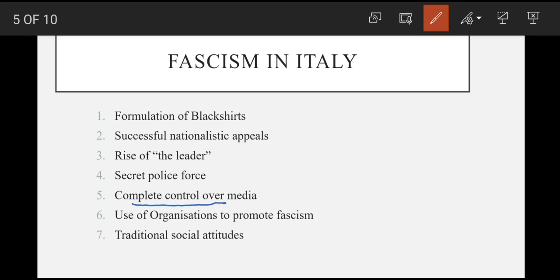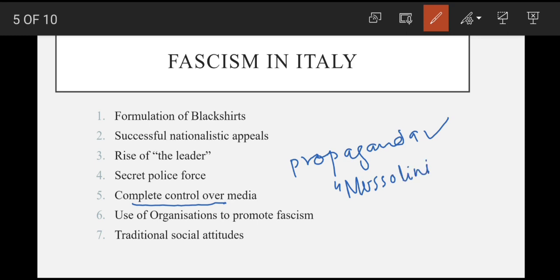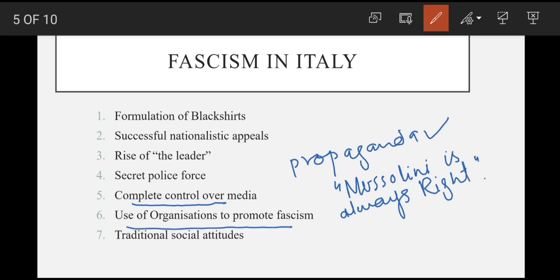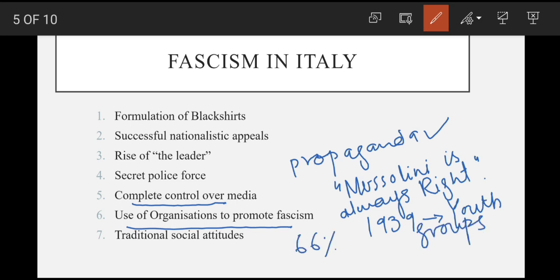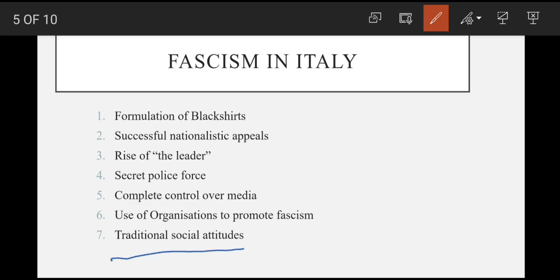Next point hai complete control over media, which included newspaper, radio, and film. Media ko propaganda ke liye use kiya jaata jis ka maqsad logon ko ek mindset — the mindset of fascists — ki taraf mold karna tha, aur is mein simple slogans shamil the jaise 'Mussolini is always right.' Is ke ilawa organizations bhi banai gayi thi jo fascism ko promote karte. 1939 tak fascist youth groups mein 66% population ki umar 8 se 18 saal tak ki thi — yeh youth groups military activities pe focus rakhte.